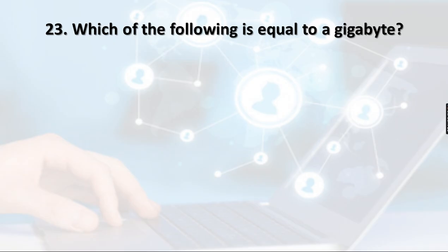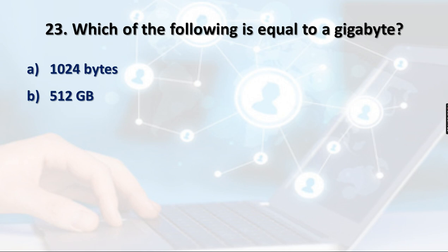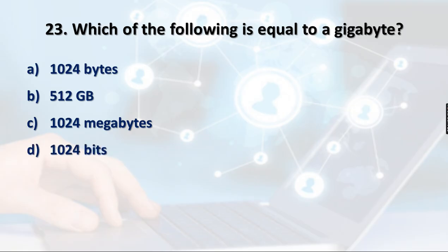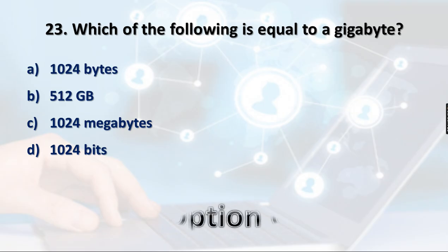Question 23: Which of the following is equal to a gigabyte? Options: 1024 bytes, 512 GB, 1024 megabytes, 1024 bits. 1024 bytes equals 1 KB, not 1 GB. 512 GB is not correct. 1024 bits is not a gigabyte either. But 1024 megabytes equals 1 gigabyte — so option C is the right answer.